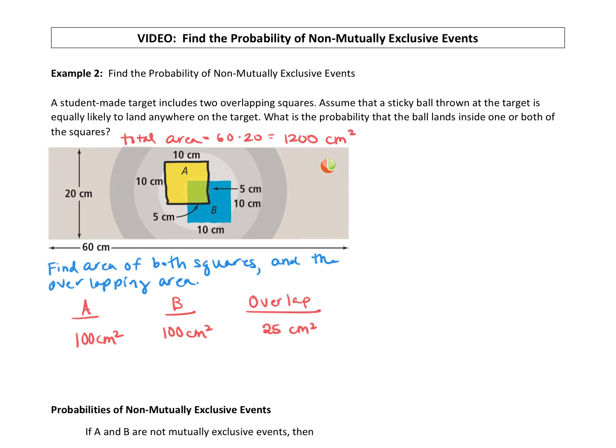To find the probability when you have non-mutually exclusive events, the probability of landing in square A or square B is equal to the probability of landing in square A plus the probability of landing in square B. But if you notice, we've counted this middle square twice - we counted it with A and then counted it again with B. But there's not two of those, there's just one. So we subtract out the probability of A and B, of it landing in that middle square, that overlap.